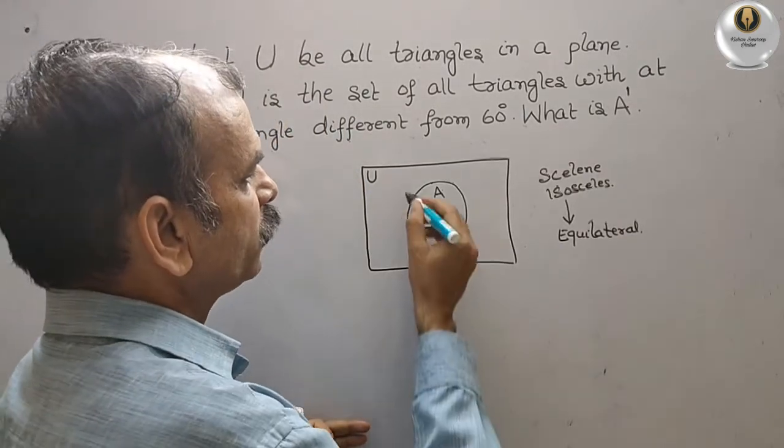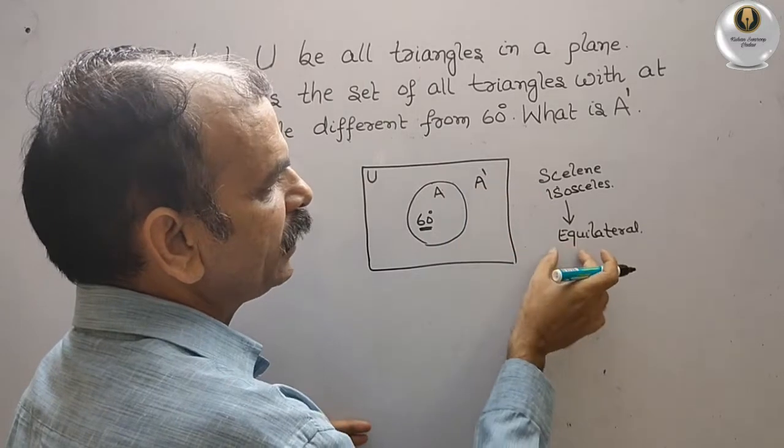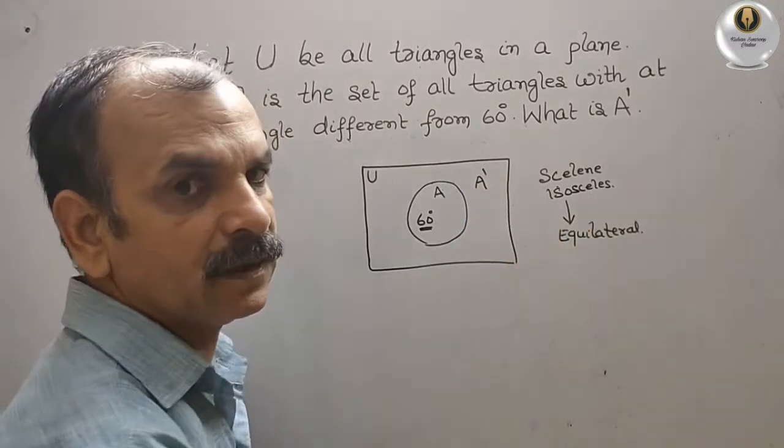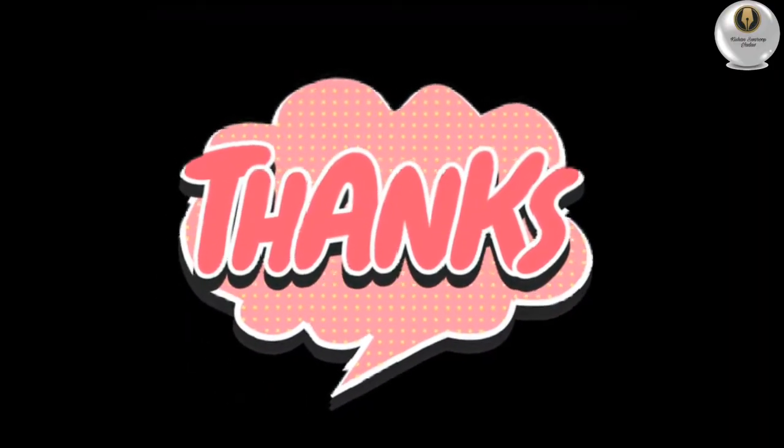Therefore we can say A dash is nothing but an equilateral triangle. Thank you.